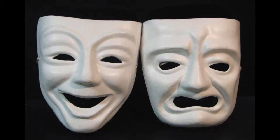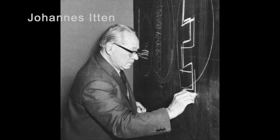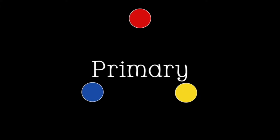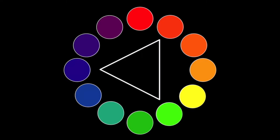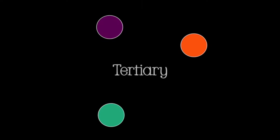He was a Swiss art theorist. He created the color wheel with red, yellow, and blue as primary colors, and also the other 12 colors found on the color wheel. The color wheel is made up of visual colors or hues. These colors are known as the primary colors, secondary colors, and tertiary colors. The primary colors are red, yellow, and blue. These are the basic colors and cannot be created from other colors.